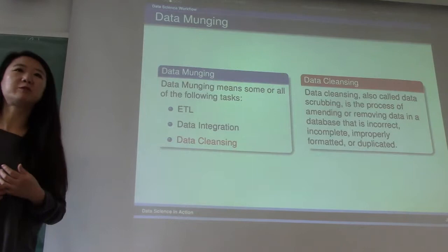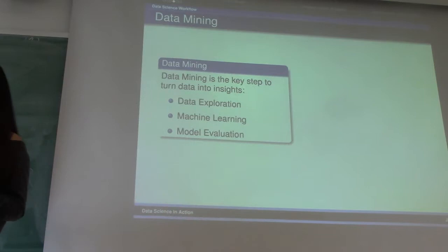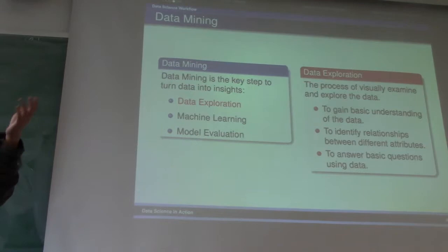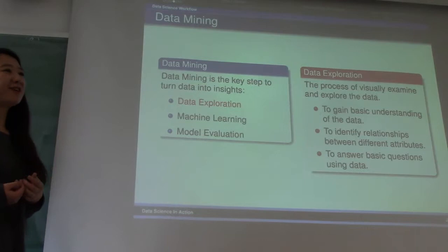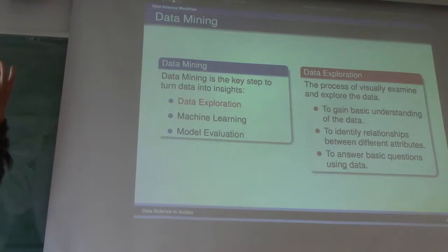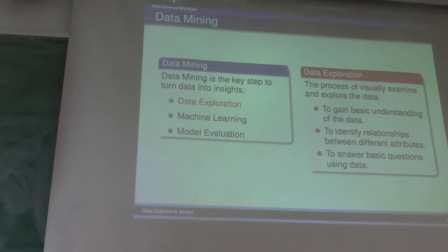Naturally, data cleansing is an important step. It doesn't have to finish in the process of data munching. When you do data mining, when you do machine learning, whenever you identify some bad data or some weird behavior, you want to go back and try to do some more data cleansing. After data munching is done, you're ready to do some data mining. Typical things you want to start with: data exploration. Usually means you look at the data, you look at summary statistics, or you visually explore the data using tools you're more familiar with. You want to check the correlation and see whether there's something weird going on.